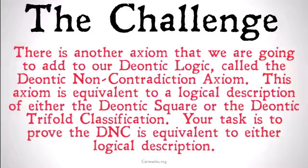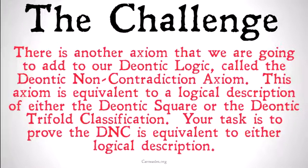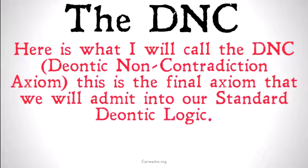In the next couple of videos we're going to give proofs of why the DNC is equivalent to the Deontic Square and equivalent to the Deontic Trifold Classification. Let's take a look. The DNC — here's what I'm going to call the DNC — the Deontic Non-Contradiction Axiom.